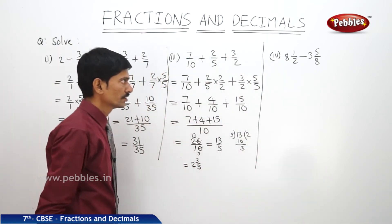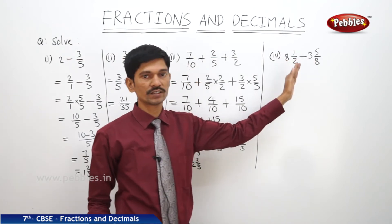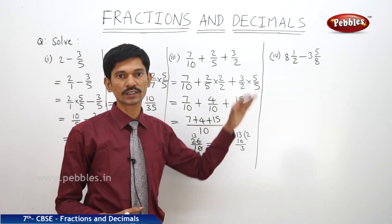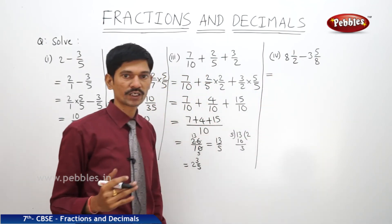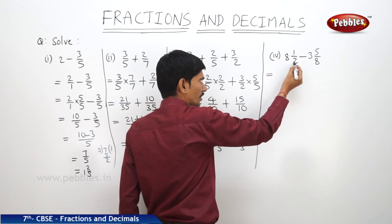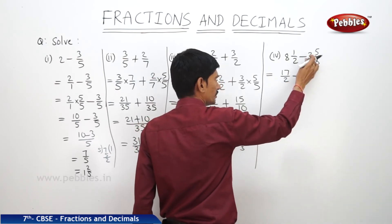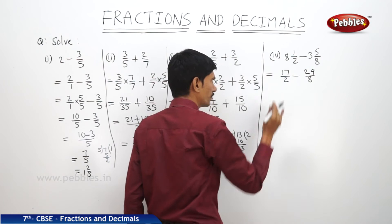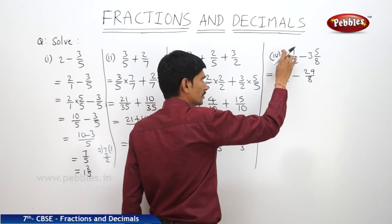The fourth question is the difference of two mixed fractions — we have to subtract one mixed fraction from another. To add or subtract mixed fractions, first convert them into improper fractions. To convert: multiply the denominator by the whole number and then add the numerator. So the first fraction gives 2×8=16 plus 1 = 17/2, and the second gives 8×3=24 plus 5 = 29/8.